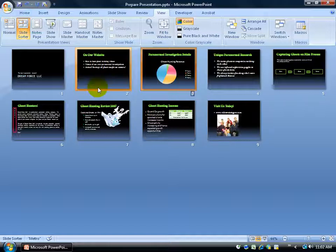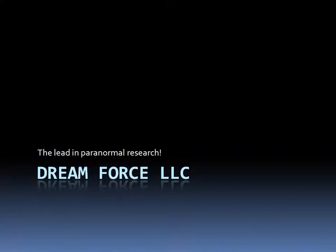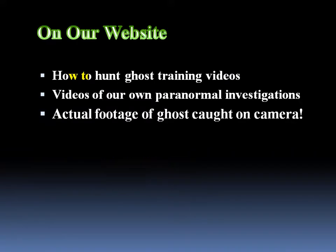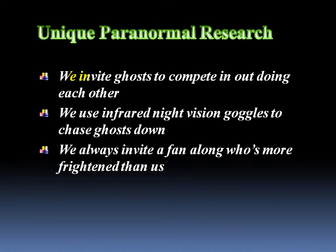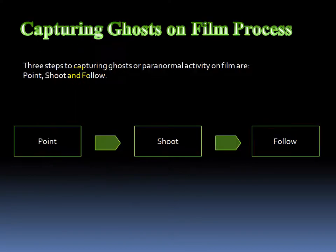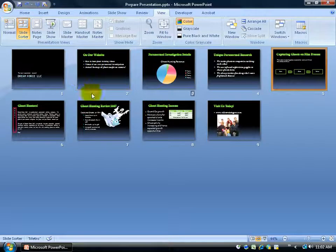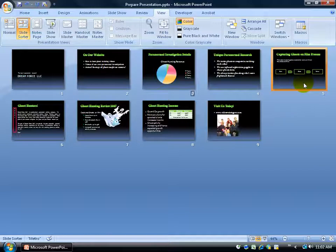Let me show you how it works. I'll go ahead and view the slide show. It starts on slide 1, and I'll click to go to slide 2. Slide 3 should be the pie chart, but because it's hidden, when I click it totally skips it and goes to slide 4, then slide 5. When I hit Escape on the keyboard it pulls me back out, and the last slide I was on was slide 5.